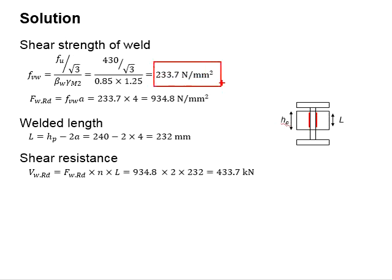The stress is later to be multiplied with the throat thickness, which is equal to 4 mm. You will get the stress per unit length of the weld. To determine the shear resistance of the connection, you need to multiply the unit length strength by the total length of the weld.